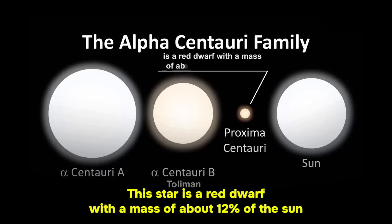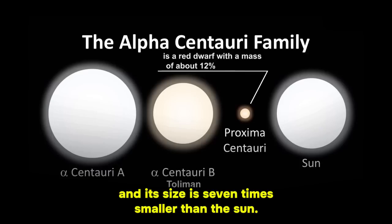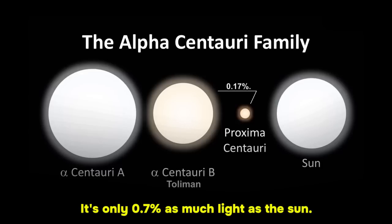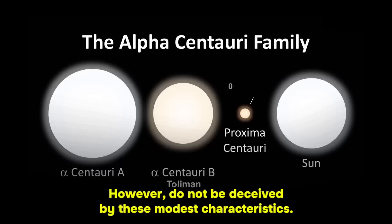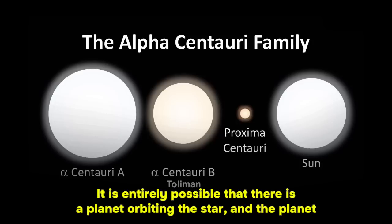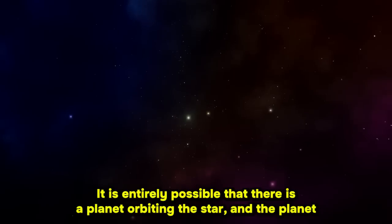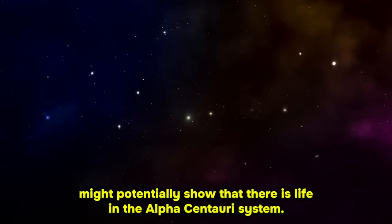This star is a red dwarf, with a mass of about 12% of the Sun, and its size is seven times smaller than the Sun. It is quite dim, and emits only 0.17% as much light as the Sun. However, do not be deceived by these modest characteristics. It is entirely possible that there is a planet orbiting this star, and the planet might potentially show that there is life in the Alpha Centauri system.